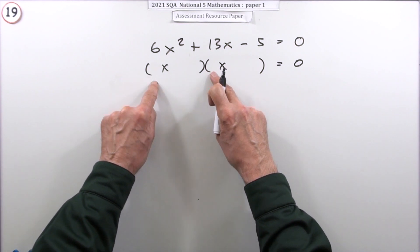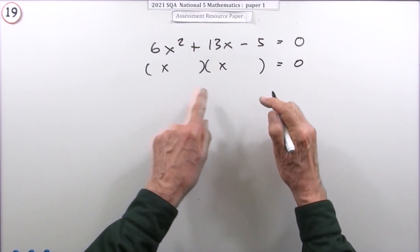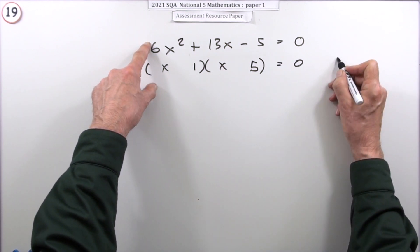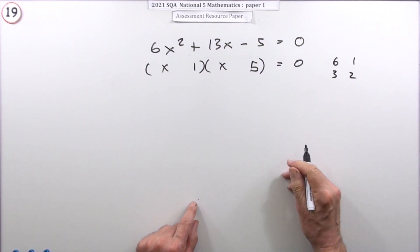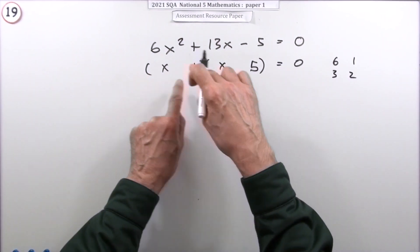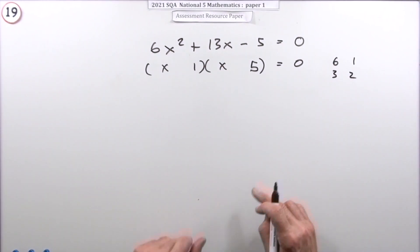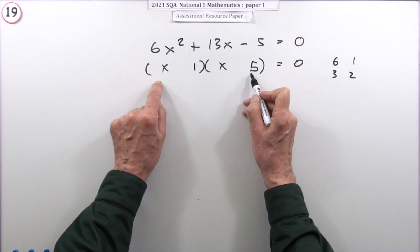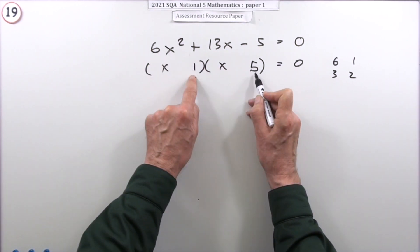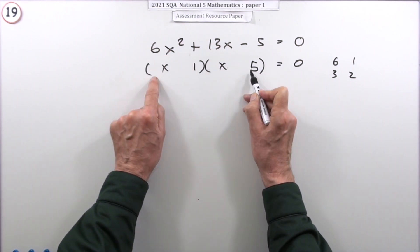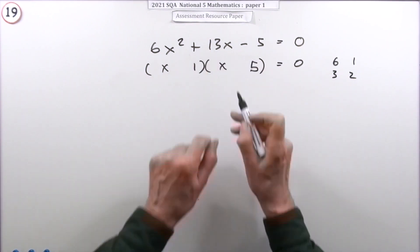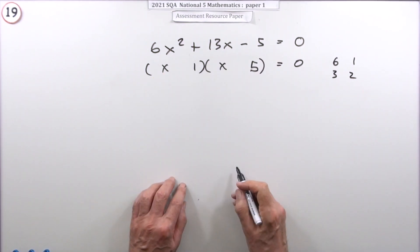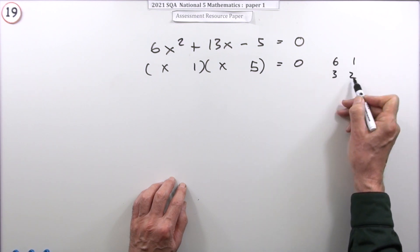The first times the first makes the first, the last times the last makes the last. If that's a 5, it could only be 1 and 5. But the first times the first makes a 6 - two possibilities: 6 times 1 or 3 times 2, either way around, so like four possibilities. The mixtures, the inner product and outer product, have to make a 13. With that minus, they have to have a difference of 13. Which one could I multiply the 5 by to have a difference of 13? 15 and 2, that's the one.